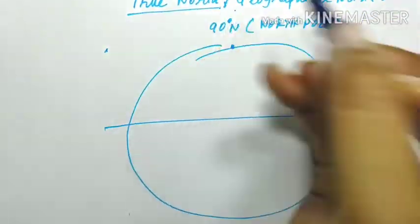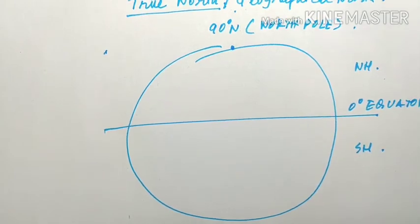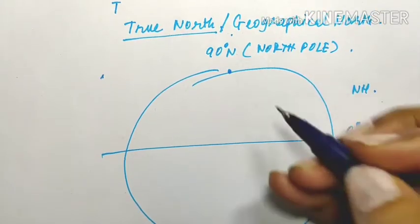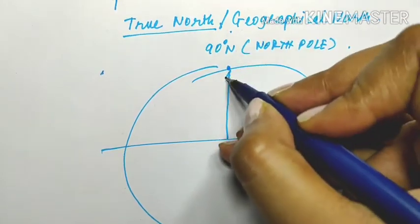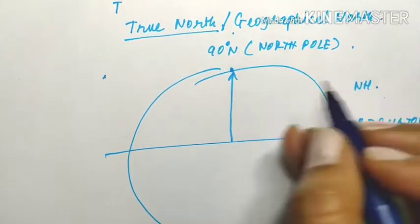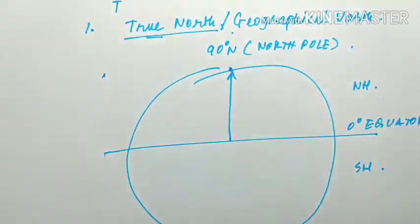So what is true north? True north is the direction pointing towards the north pole. This was the first concept.